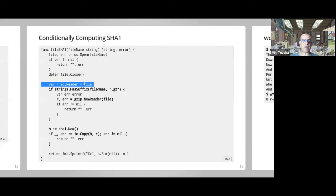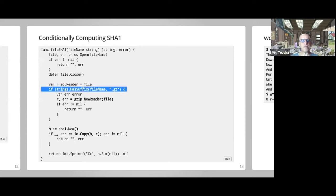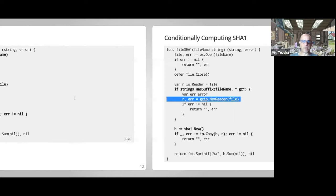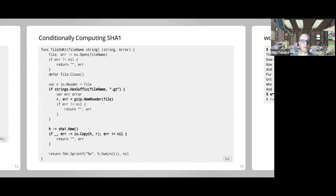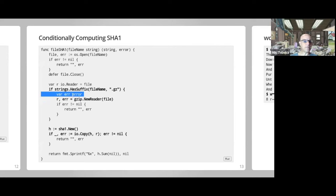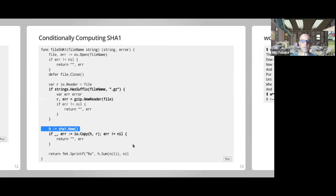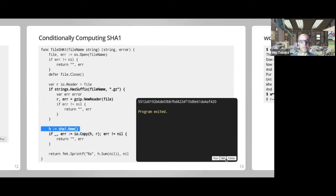I define r here as an io.Reader equal to file — a new variable pointing to file — because file implements io.Reader I can do that. Then if it has a .gz suffix I do the same thing, but I need to be careful not to use := here because that would create a local variable scoped to the if statement. So I declare the error separately and assign. From there it's the same as before and the same result.